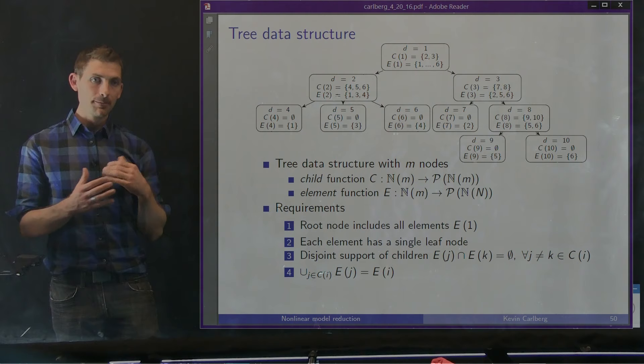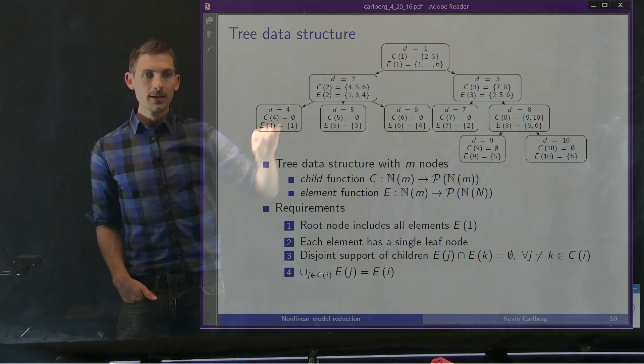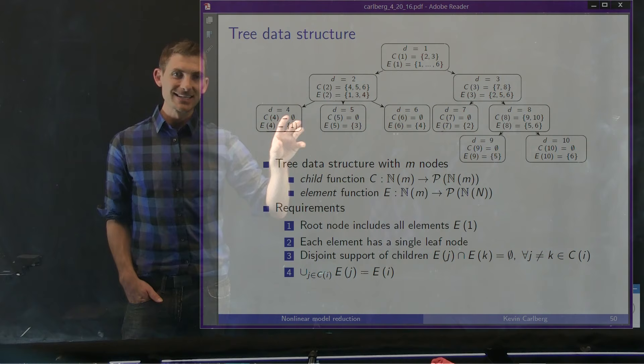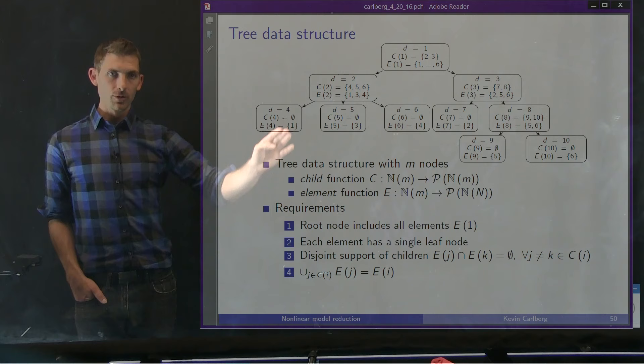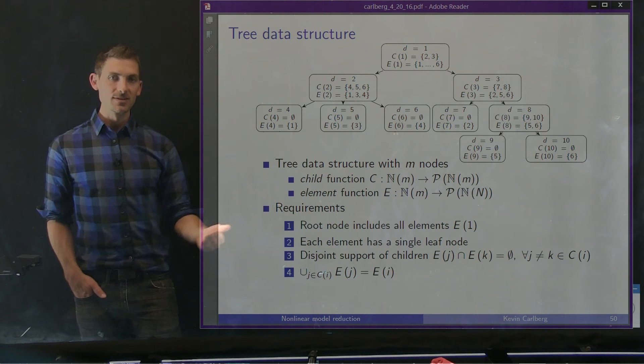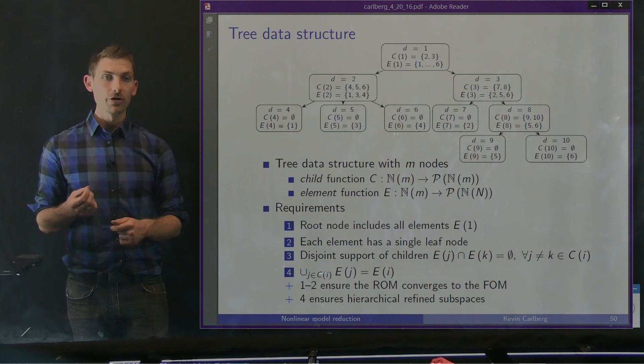In a six-dimensional example, if every vector starts in state 1 as a dense vector with all entries one to six non-zero, we enforce several conditions: the root node includes all elements, each element has a single leaf node from 1 to n, children have disjoint support, and the union of children's elements equals the parent's elements. Conditions one and two ensure convergence to the full model, and condition four guarantees hierarchical refined spaces.